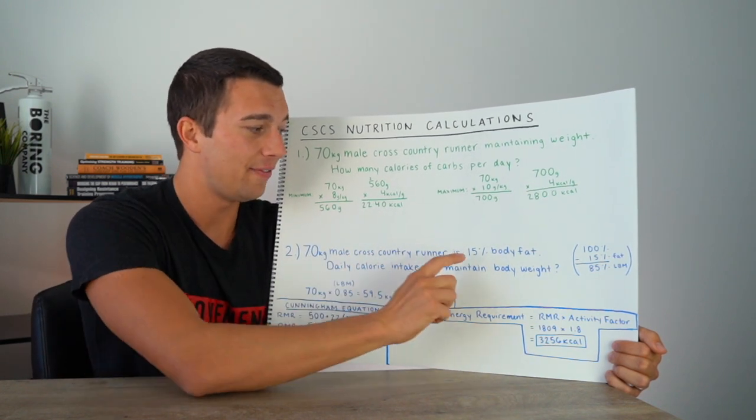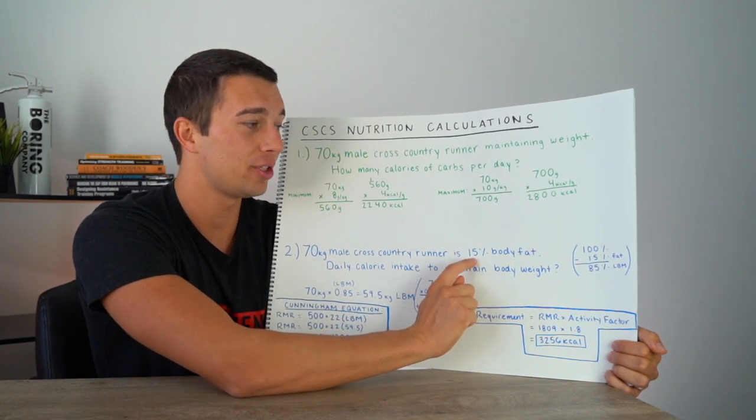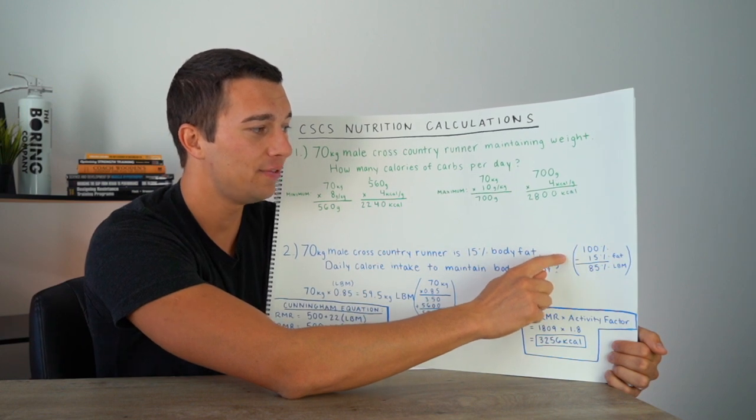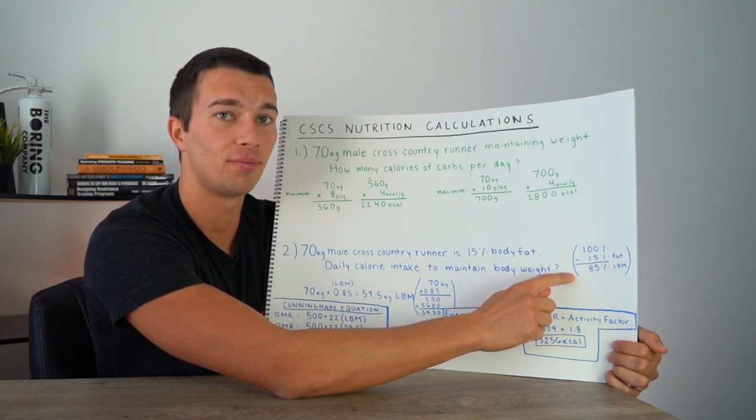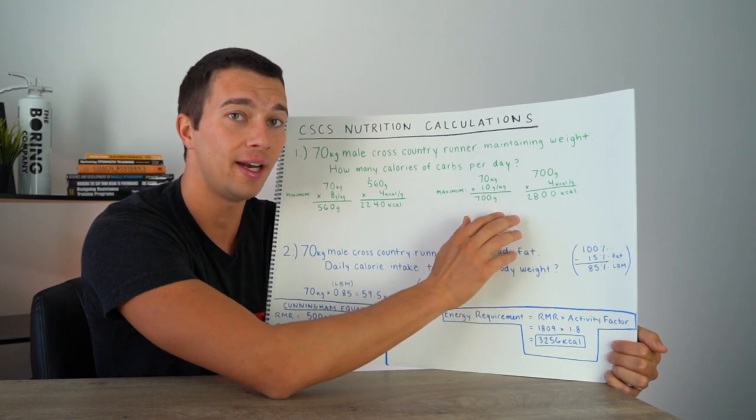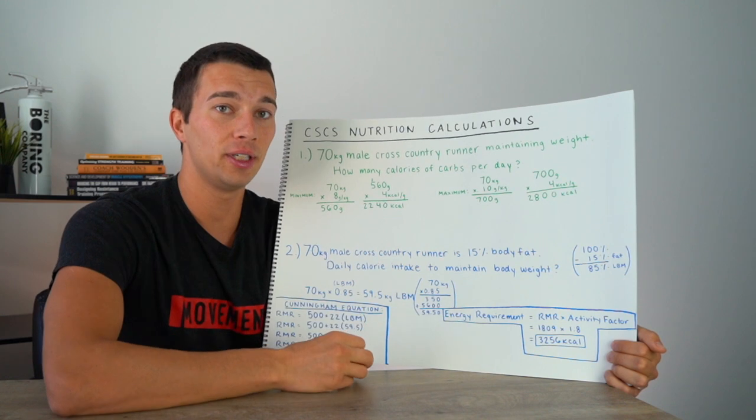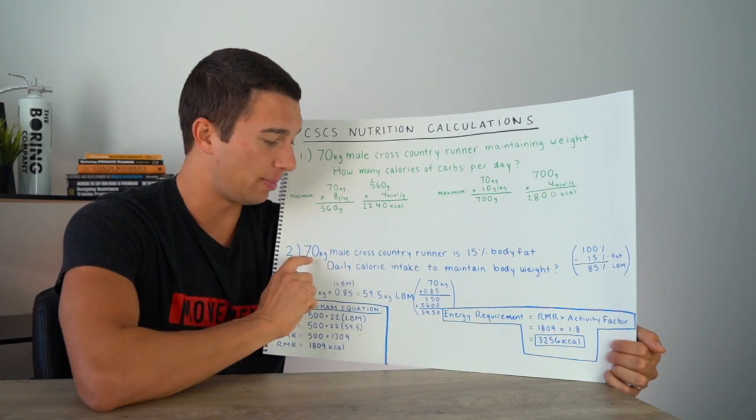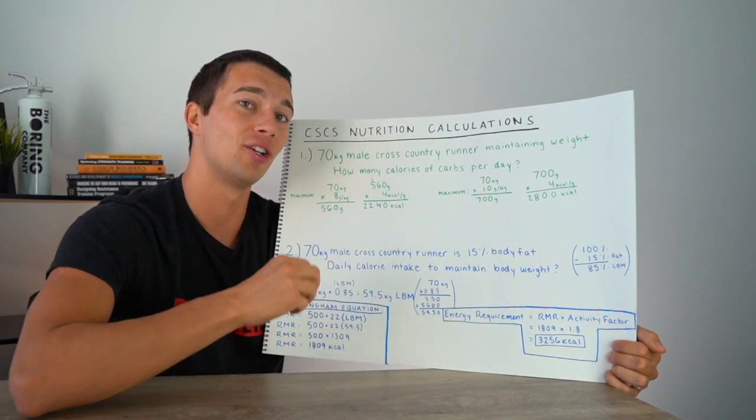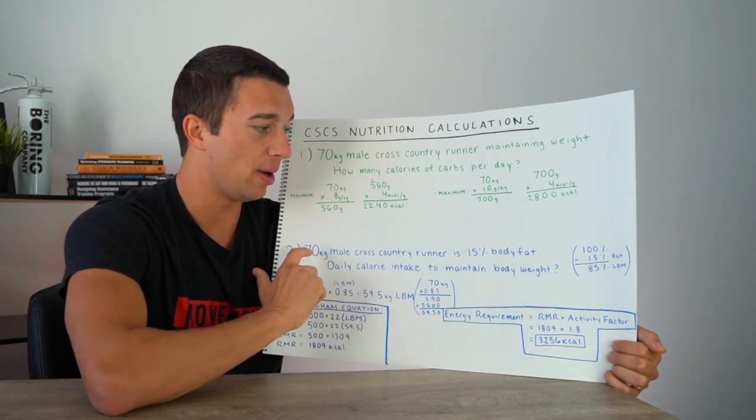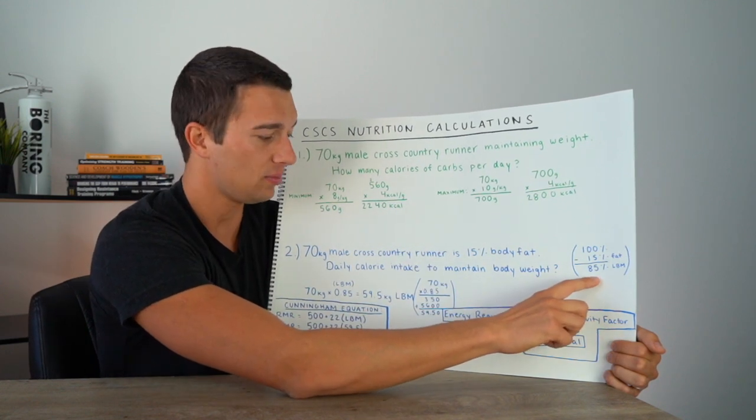There was a correction update paper that had that listed as a correction. So what you'll want to use is this 500 plus 22 times lean body mass when we get to the Cunningham equation. All right, but knowing that this equation has lean body mass, how do we actually find lean body mass just knowing that this athlete is 70 kilograms and 15% body fat? Well, this is really important. If an athlete's 15% body fat, then that means they would be 85% lean mass. So 100% minus the 15% would get you 85% lean body mass. If an athlete was 20% body fat, they would be 80% lean body mass. So if you wanted to calculate their fat mass, you would just do their body weight times their percent body fat, and that would get fat mass. But if you want to calculate their lean body mass, you would do body weight times their lean body mass percentage. So in this case, we're going to do the 70 times 0.85.